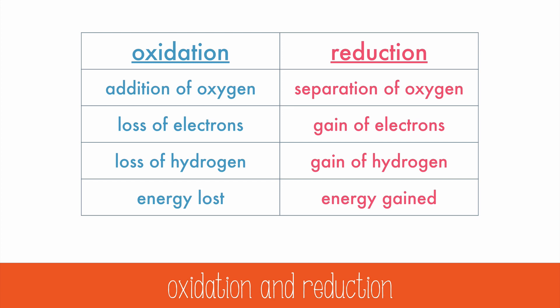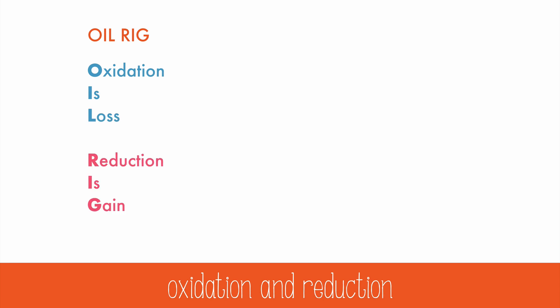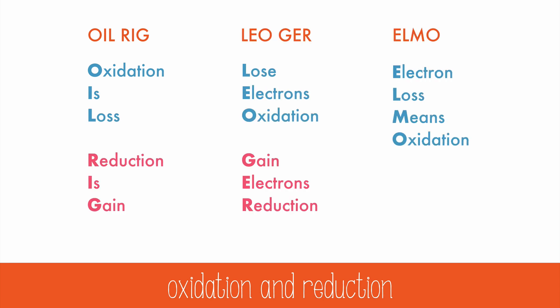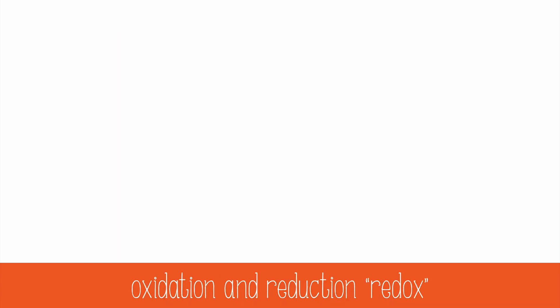To remember these definitions, there are some helpful mnemonics you could use. You could use OIL RIG, LEO GER, or ELMO to help you remember that oxidation is a loss of electrons, and reduction is the gain of electrons. Pick one that works for you, and stick it in your brain. Oxidation and reduction must always happen together, and sometimes the words are combined to redox.